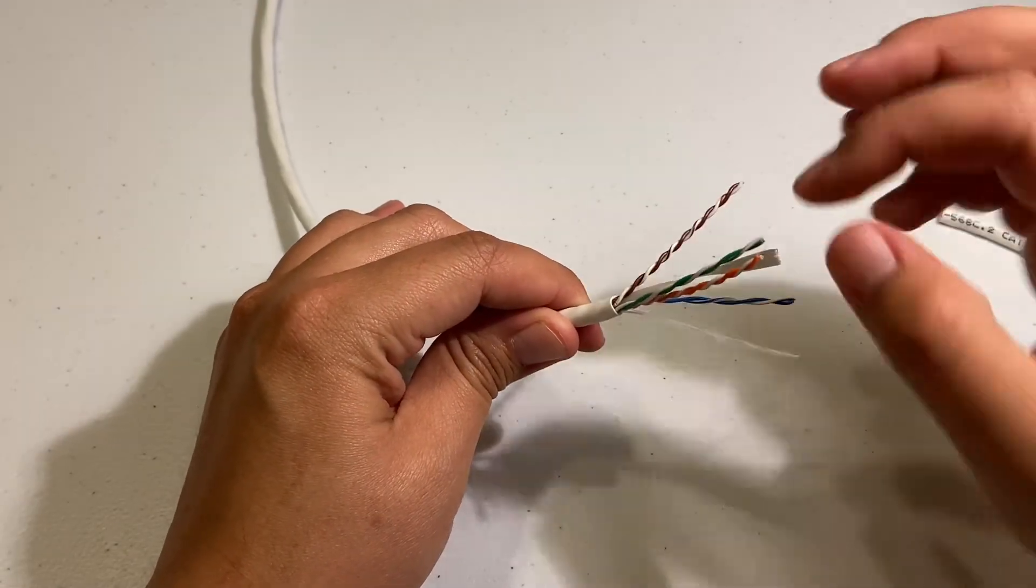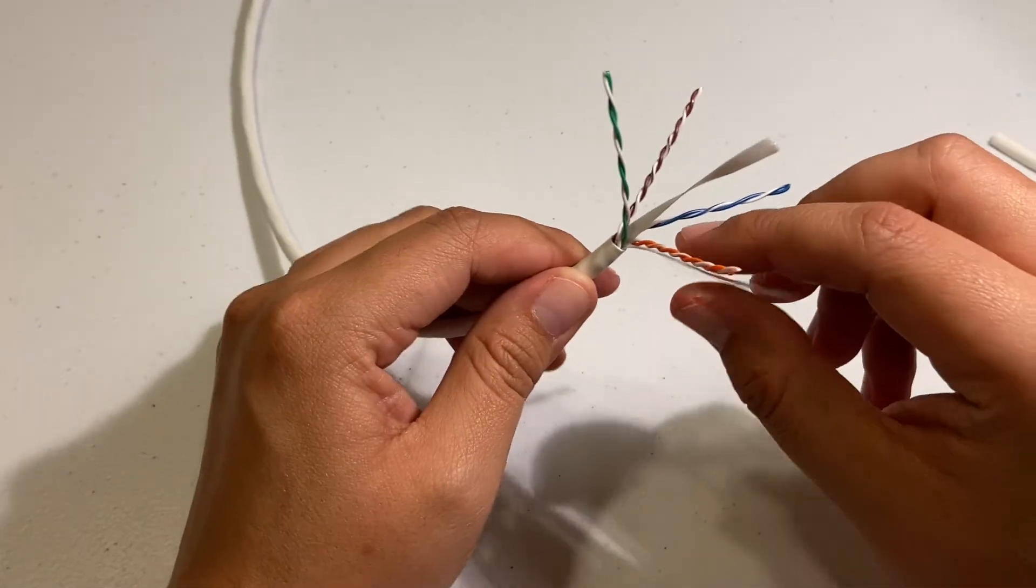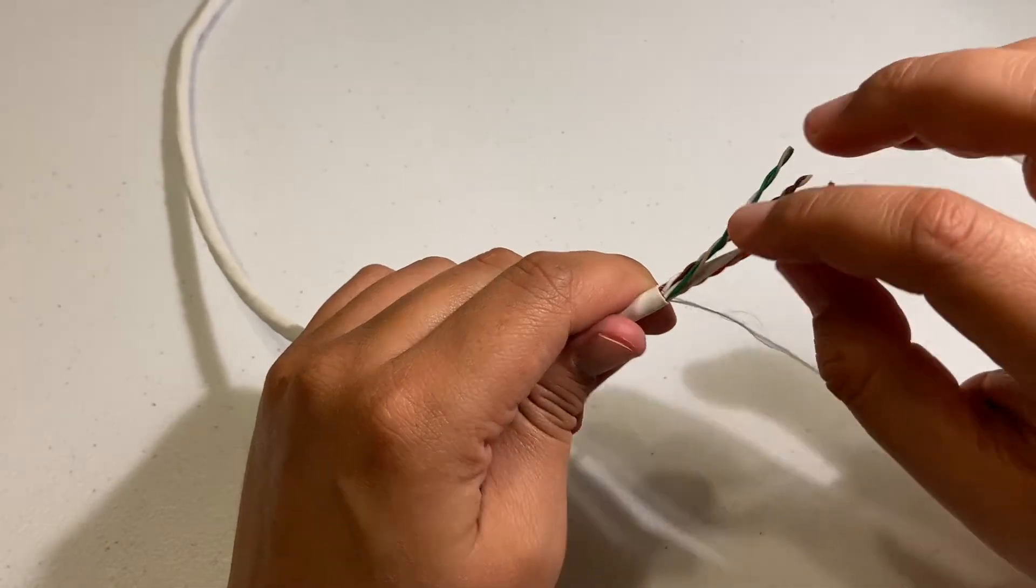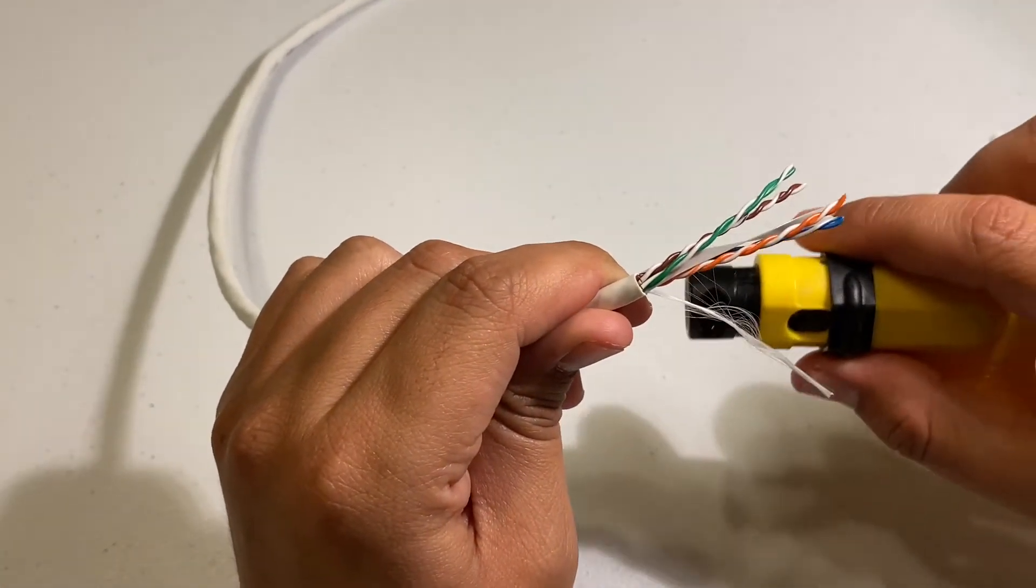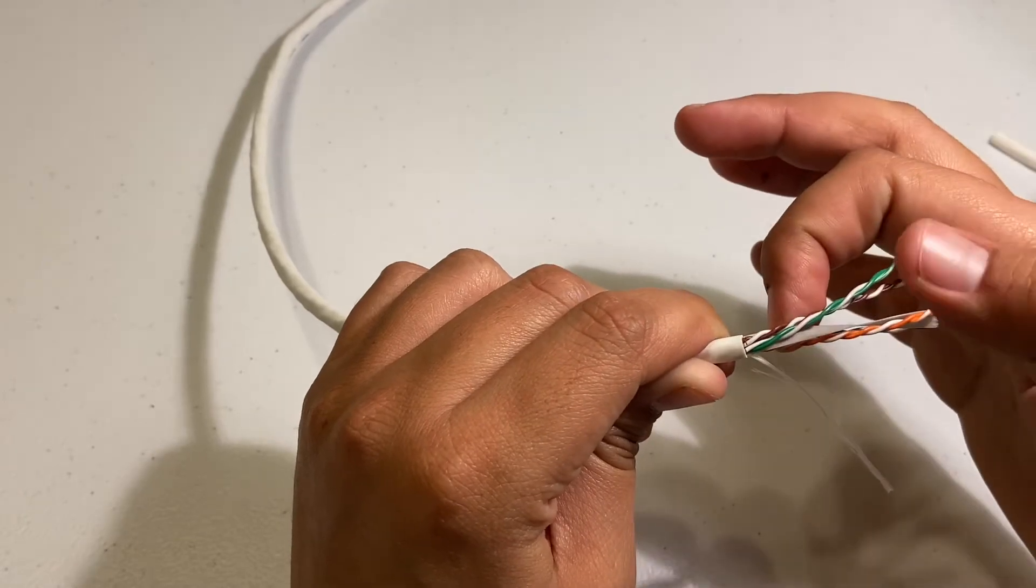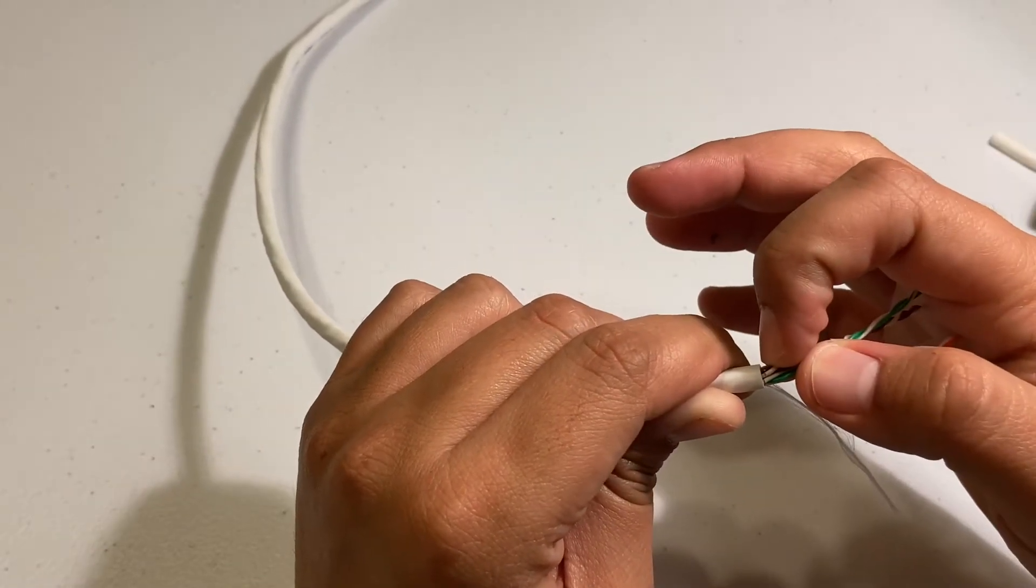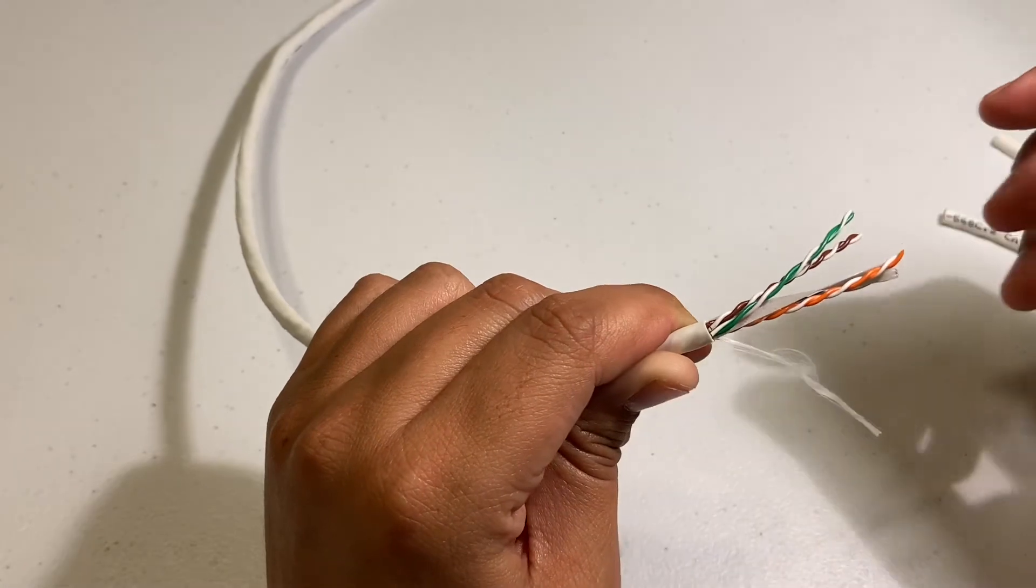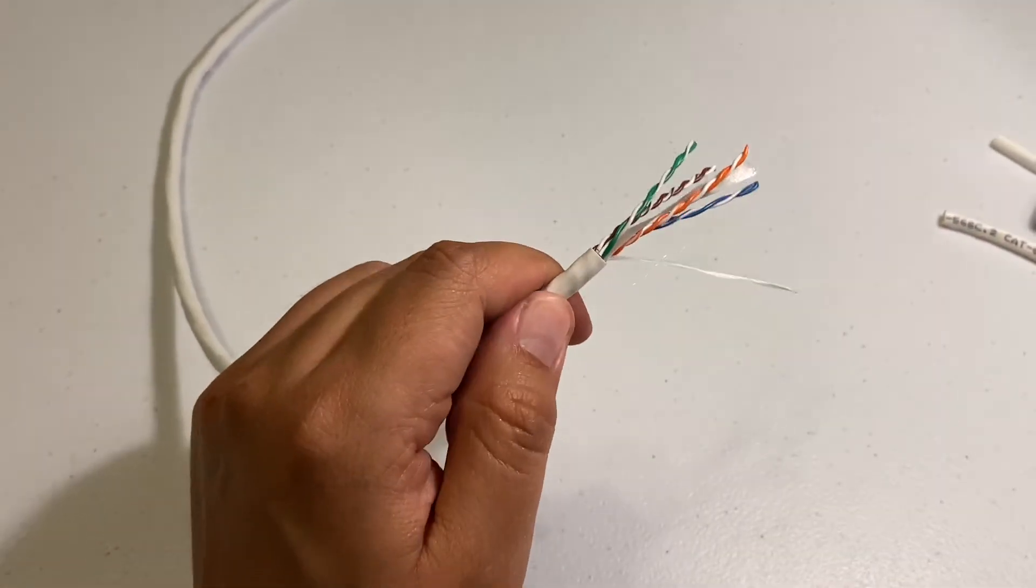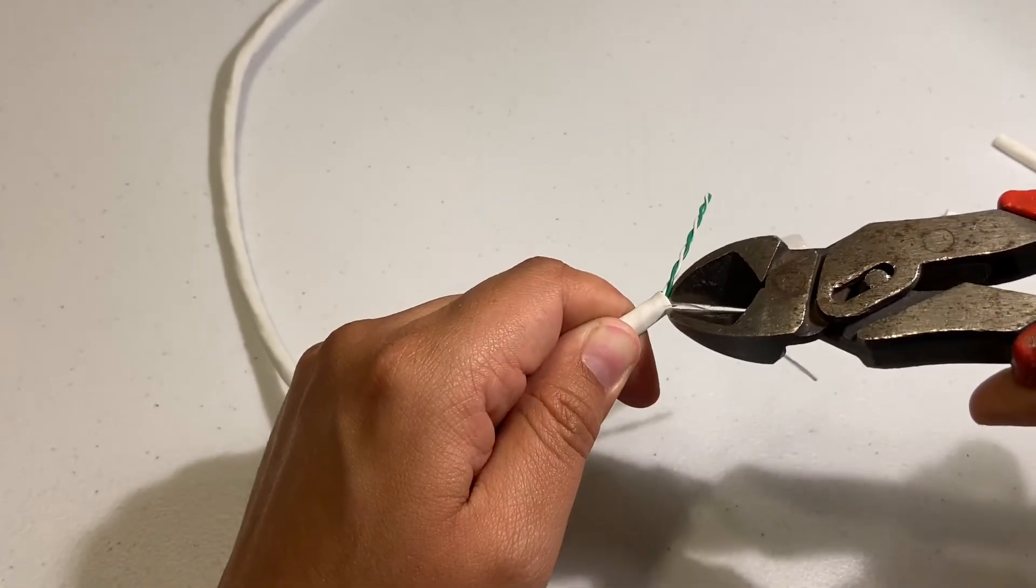So we're gonna have one, two, three, four pairs and then the insulation in the middle. Now we don't want to use this part from here because every time we spin the strippers or the scissors around, there is a big possibility that you can damage the wires inside. And we don't want to use that because if we end up using this and it's already damaged, we're gonna have trouble with the wire. So what we'll do is we're gonna pull it down, but first we're gonna make a little cut right here on the same sleeve.